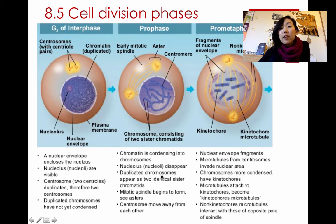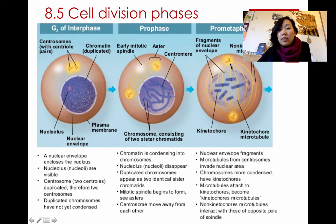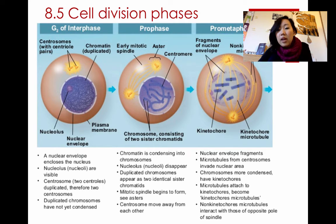In pro-metaphase, the phase in between prophase and metaphase, the nuclear envelope around the nucleus completely dissolves. The centrosomes move to the opposite ends of the cell, and their mitotic spindles start to attach to the centromeres between the two sister chromatids.